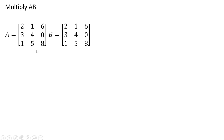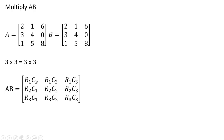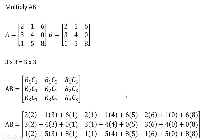Some more examples. Here we have matrix A and matrix B, both 3 by 3 matrices. Can we multiply these? Yes, the inner numbers match, and the outer numbers tell us our result will be a 3 by 3 matrix. We do row 1 times column 1, then row 1 times column 2, then row 1 times column 3, and then move down. Here are the numerical results — a quick check shows the numbers in parentheses match vertically.